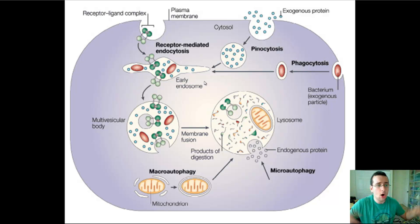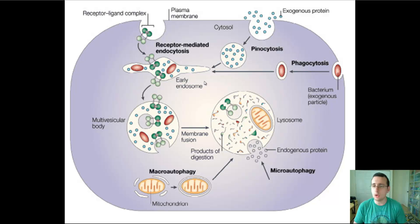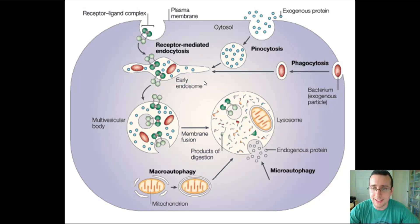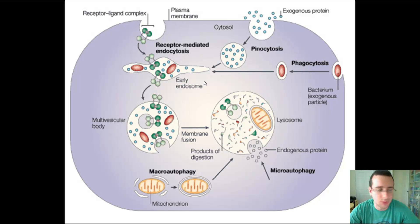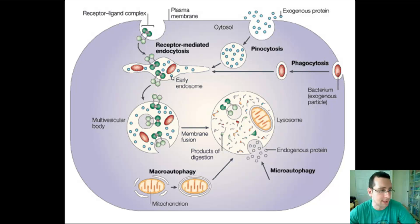What actually happens is when all of these things get together — the vesicles from pinocytosis, from receptor-mediated endocytosis, from phagocytosis, and the macroautophagy and microautophagy proteins — everything is inside the lysosome. The enzymatic proteins and acidic content inside the lysosome will actually digest those proteins into smaller chunks, which we call amino acids. So the amino acids come from the digestive processes that happen inside the cell.